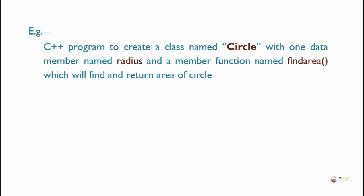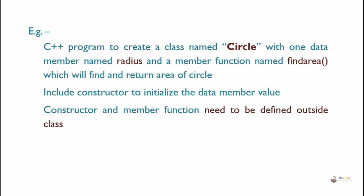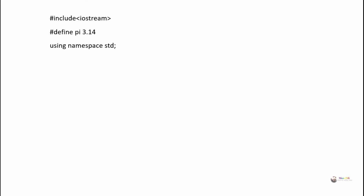Example: a C++ program to create a class named Circle with one data member radius and a member function find_area that finds and returns the area of a circle, with a constructor to initialize the data member. Here the constructor and find_area need to be defined outside the class. We create a class Circle with a private data member radius, and in the public section we declare a parameterized constructor with one integer parameter and a member function find_area with return type float.